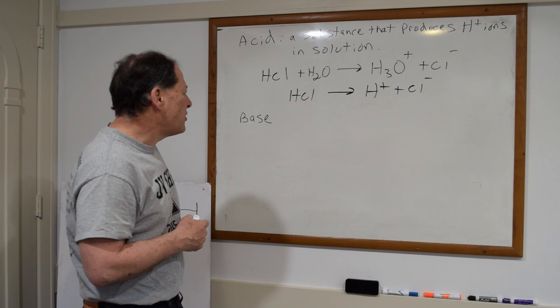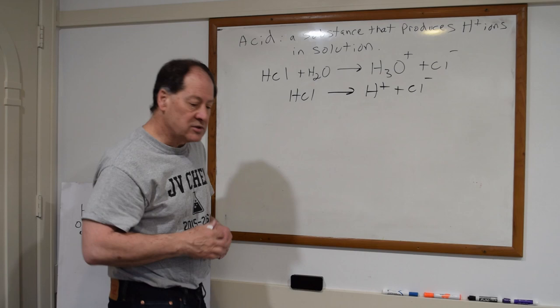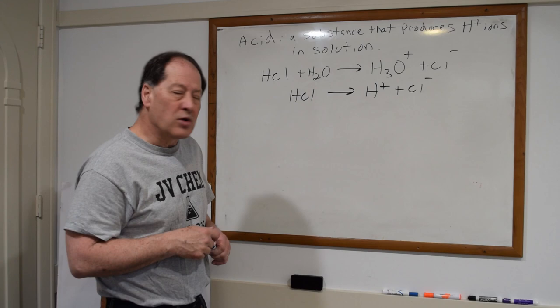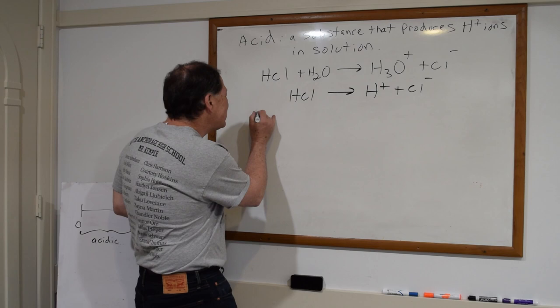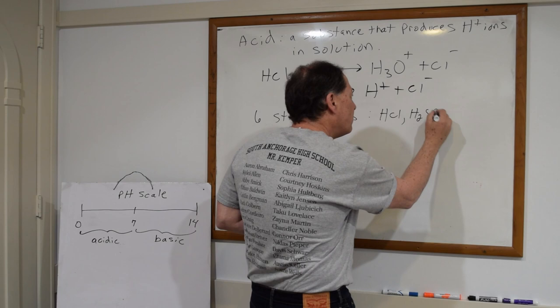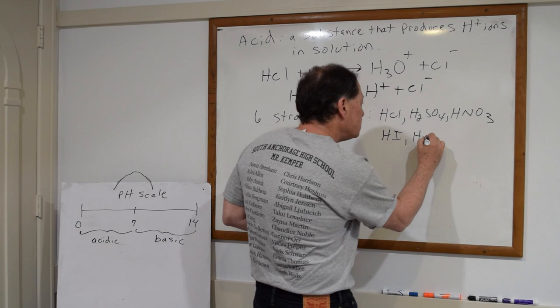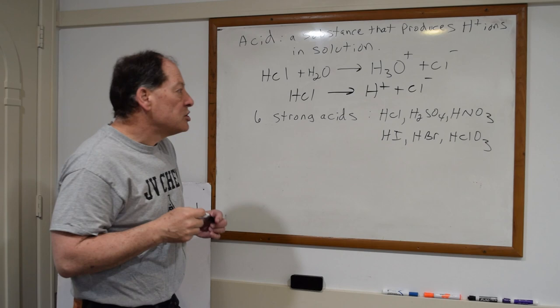There are lots of different acids you're probably familiar with — things like ascorbic acid and vitamin C, lactic acid when you exercise. All of those produce hydrogen ions or hydronium ions in solution. Phosphoric acid is another that's in a lot of sodas. There are six strong acids: HCl, H₂SO₄, HNO₃ — those are the three main strong acids we see in the laboratory. There are three others you won't see in the laboratory.